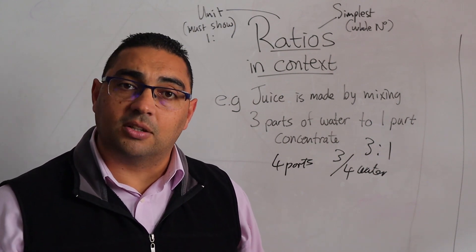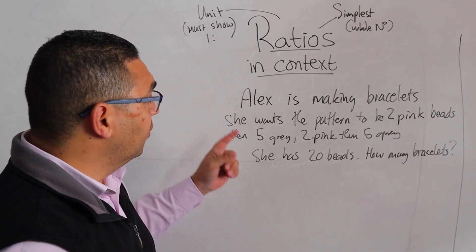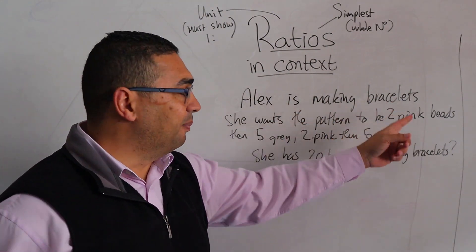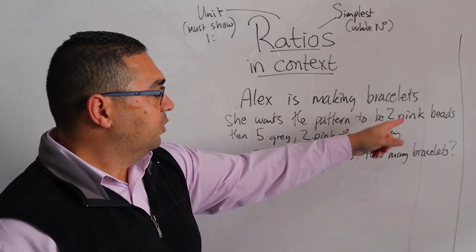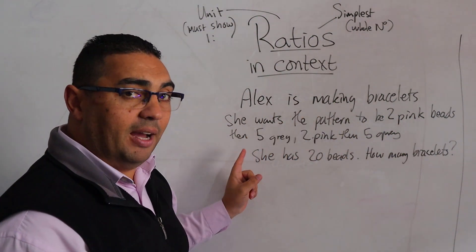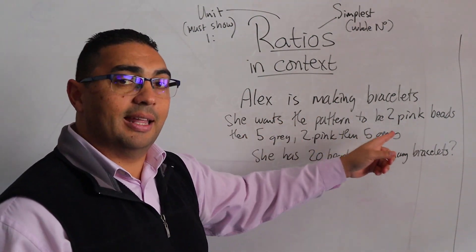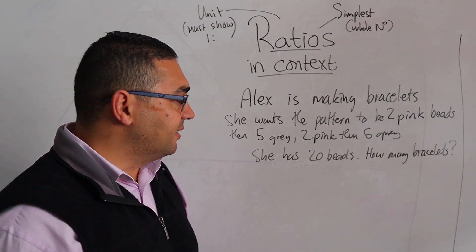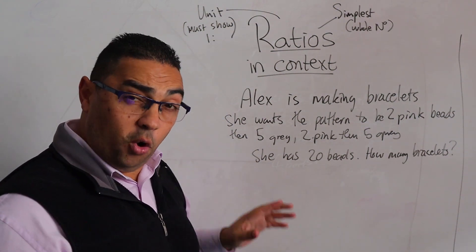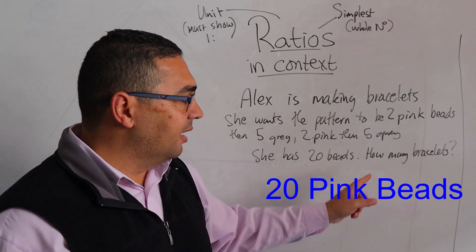Let's look at another example. In our next example we have Alex who's making bracelets and she wants the pattern on those bracelets to be two pink beads, then five gray, then two pink, and then five gray again. So that's the pattern she wants on her bracelet. Now they ask us, if she's only got 20 beads, how many bracelets will she be able to make?